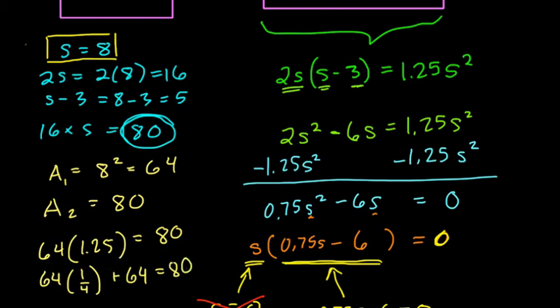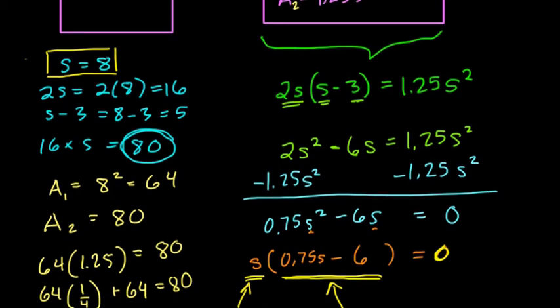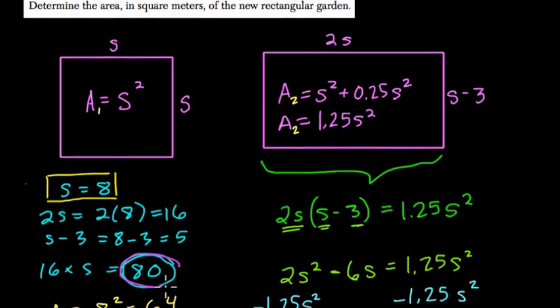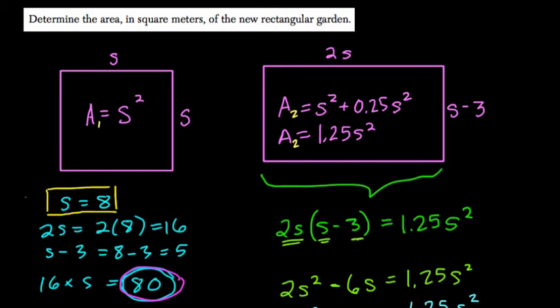right, that the larger garden has an area of 25% more. So that gives us a sense that our answer is correct. So again, this would be the area. And since we're looking at meters, our final answer would be 80 meters squared.